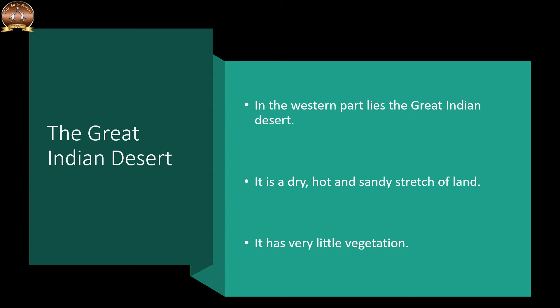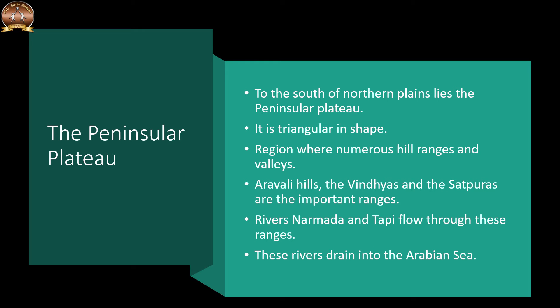To the south of the Northern Plains lies the Peninsular Plateau. It is triangular in shape and the relief is highly uneven, with numerous hill ranges and valleys. The Aravalli Hills, one of the oldest ranges of the world, border it on the northwest side. The Vindhyas and the Satpuras are the important ranges, and rivers like the Narmada and the Tapi flow through these ranges as west-flowing rivers, finally draining into the Arabian Sea.